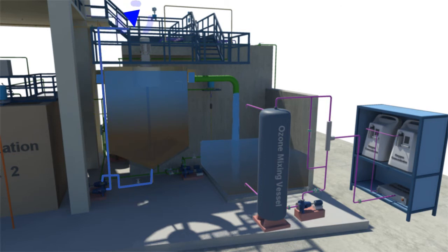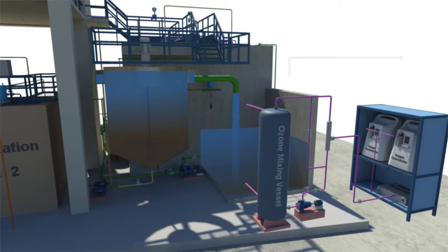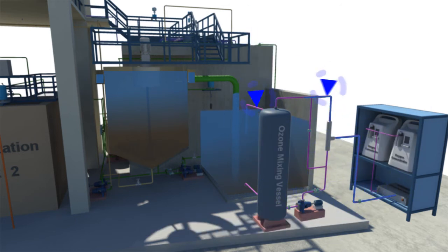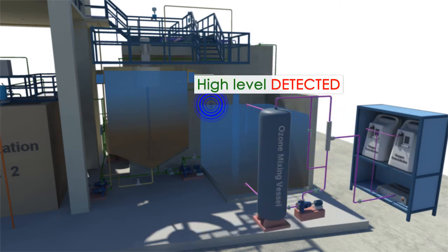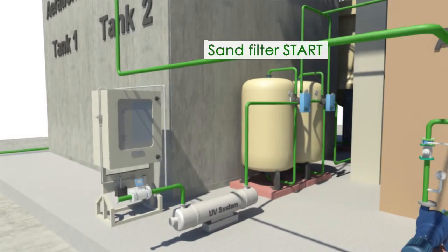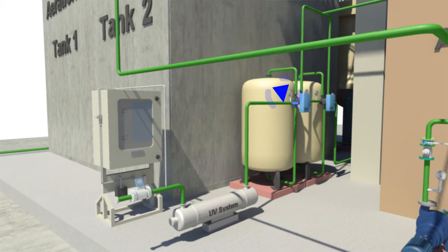At this stage, the ozone mixing unit starts and ozone is mixed into the water to disinfect it, kill bacteria, and oxidize residual BOD and COD concentration. With the help of sand filters, the treated effluent is further purified and residual suspended particles or colloids are removed.